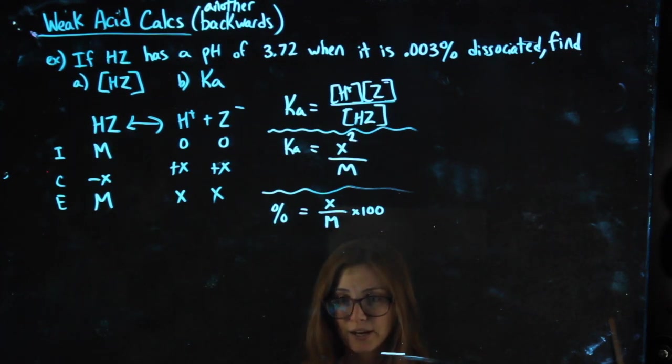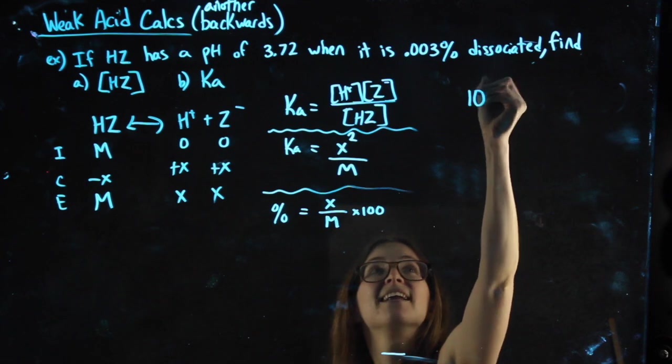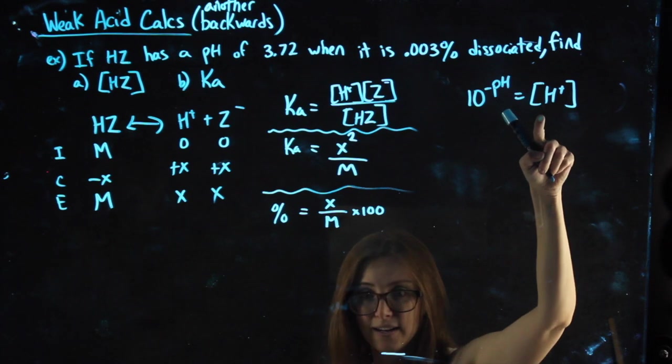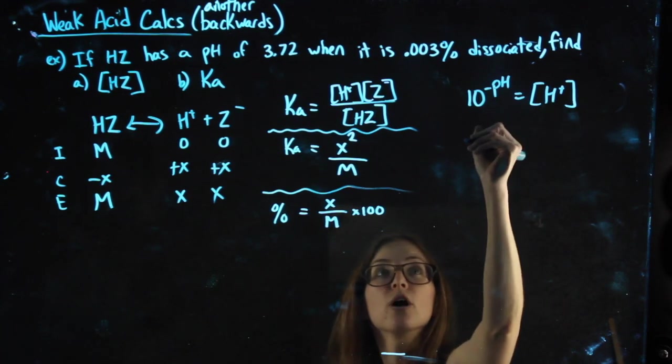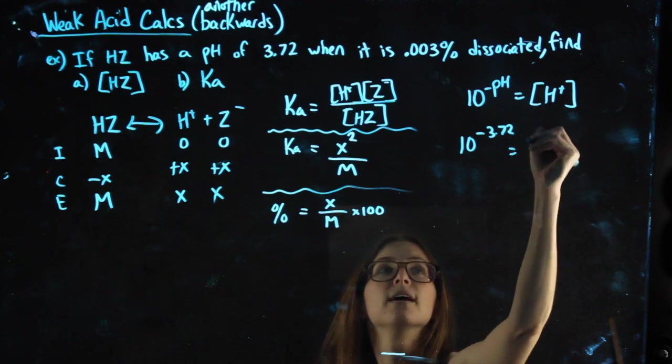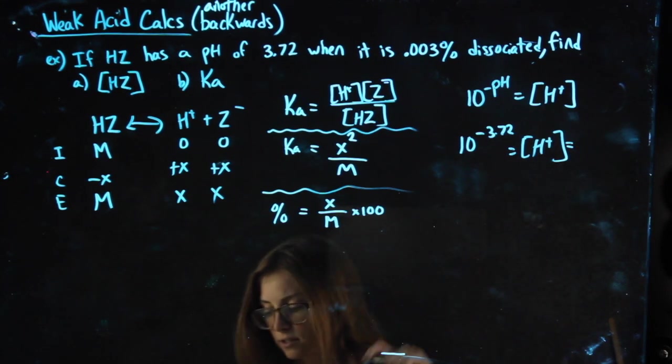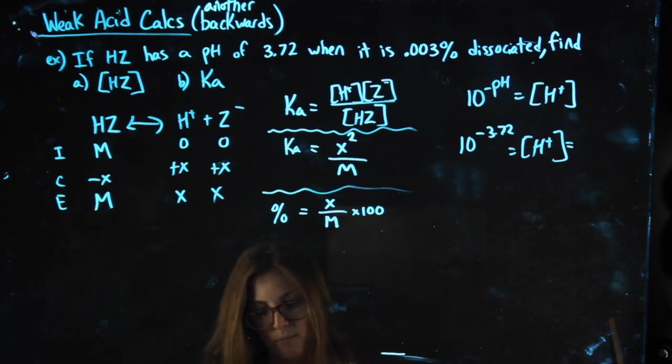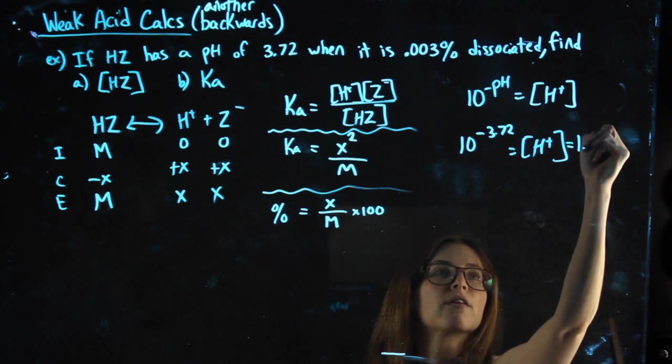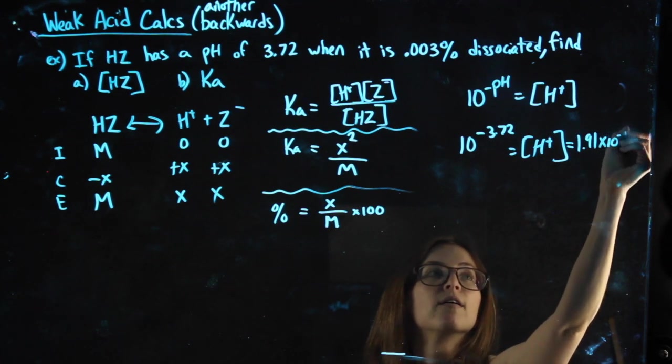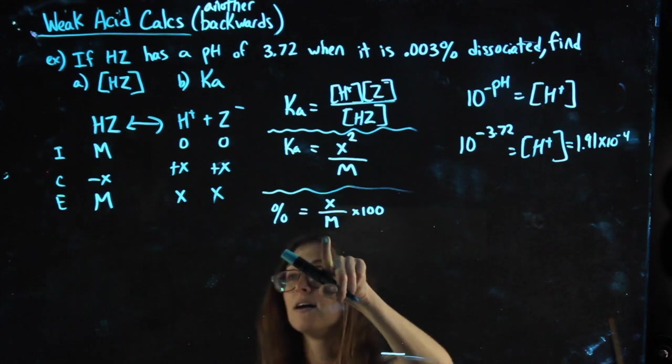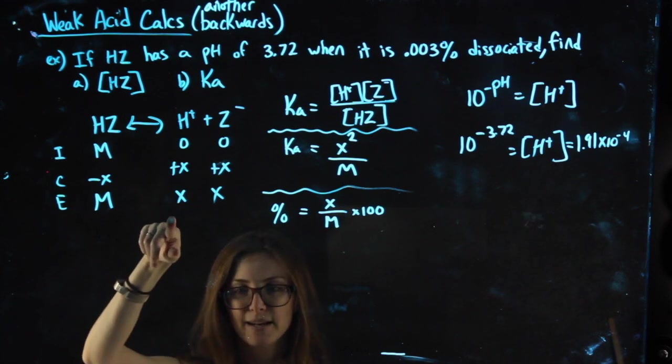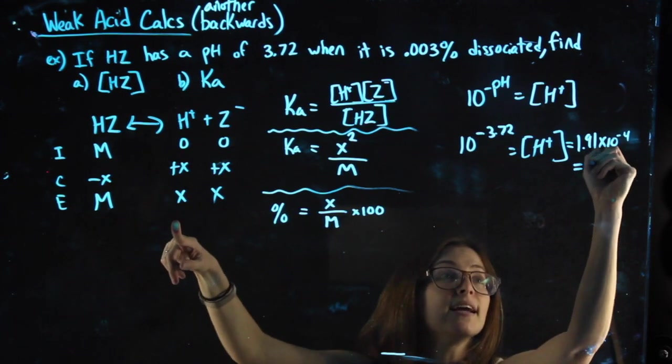The percentage can be plugged in here. The pH is not a molarity. pH is not the same thing as molarity. But I do know that 10 to the negative pH gives me H plus, molarity. So doing that here, 10 to the negative 3.72 gets me my H plus concentration, 1.91 times 10 to the negative 4. That is not my M. If I go here, M is the concentration of HZ. H plus is represented by X. So this is my X value.